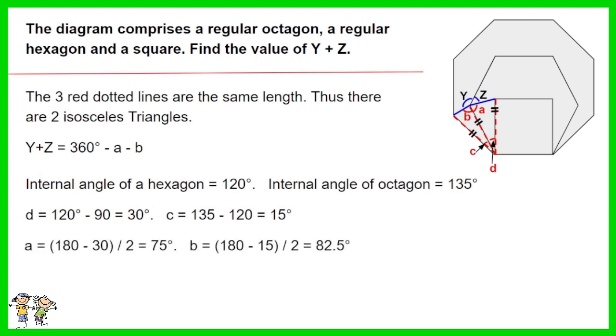A equals 180 minus 30, then divided by 2, which equals 75 degrees. B equals 180 minus 15, then divided by 2, which is 82.5 degrees. Thus Y plus Z equals 360 minus 75 minus 82.5. The answer is 202.5 degrees.